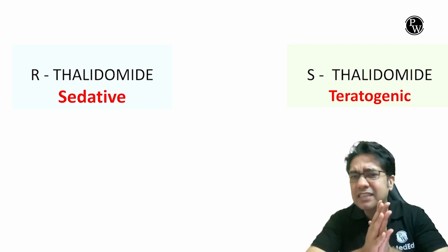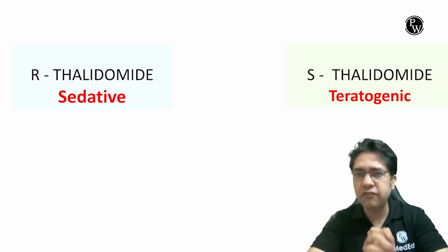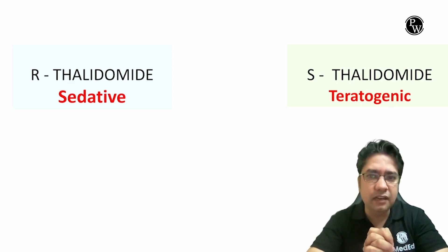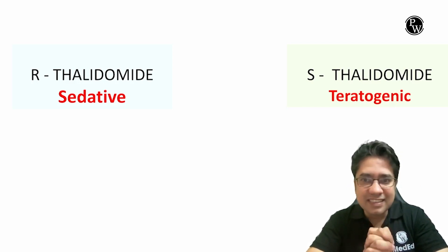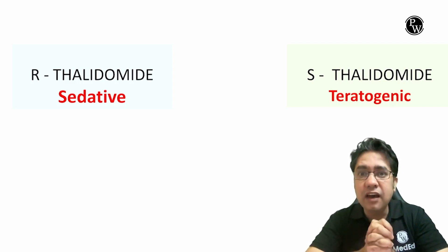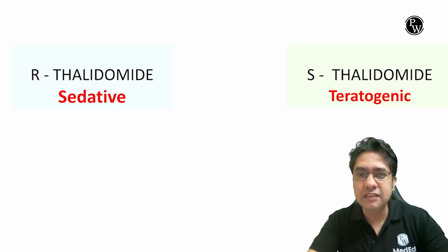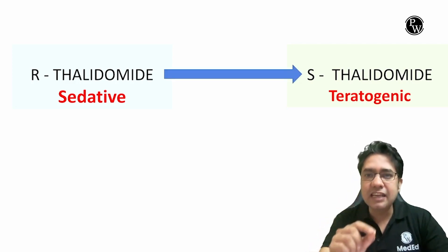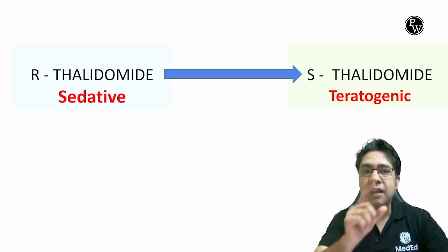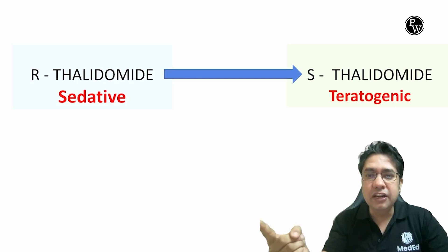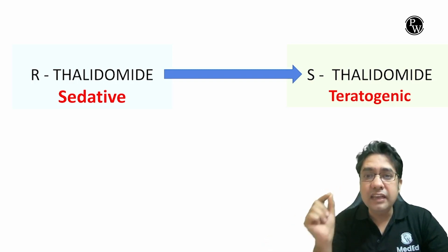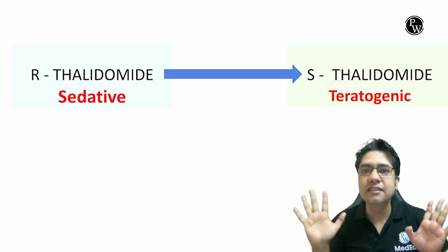The question is: can we use the R form of Thalidomide in pregnancy? The answer is no. Even the R form of Thalidomide is not used in pregnancy, because inside the body, R can be converted into S form spontaneously.